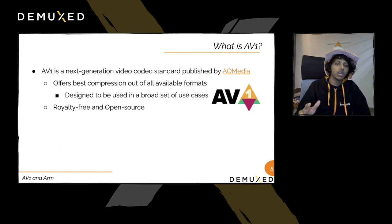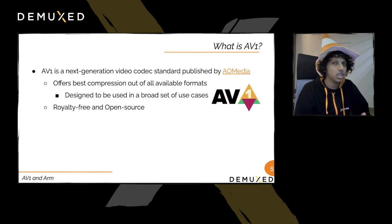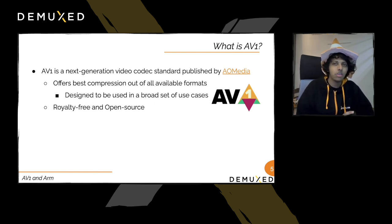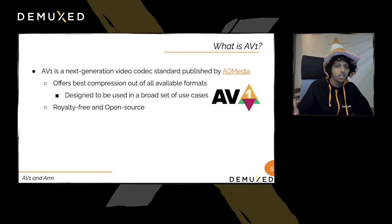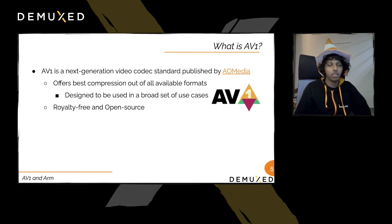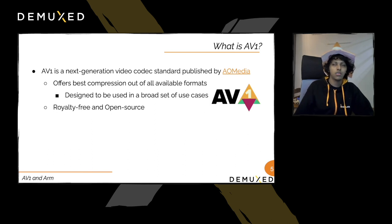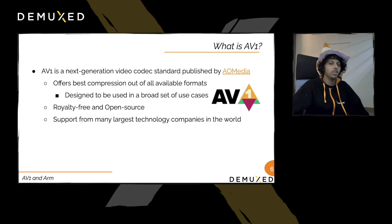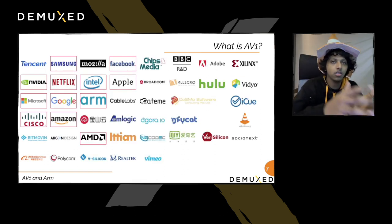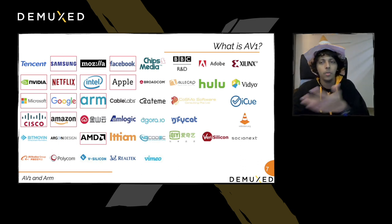AV1 is the next-generation video codec standard published by the Alliance for Open Media. It offers around 30 to 50 percent compression efficiency improvement over previous-generation codecs. It's royalty-free and open source, supported by large tech companies including Facebook, Apple, Netflix, Google, Amazon, Samsung, and many others.